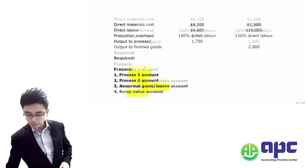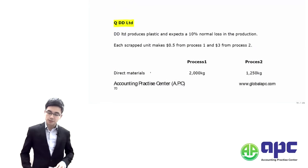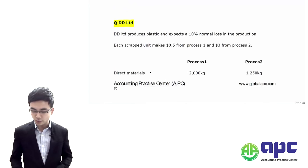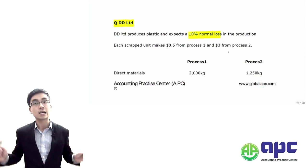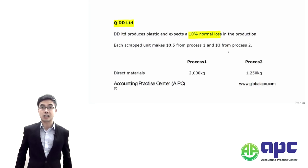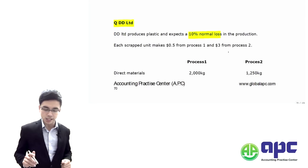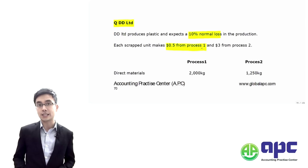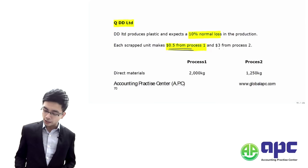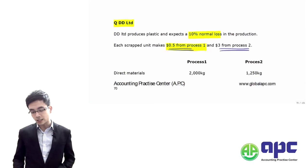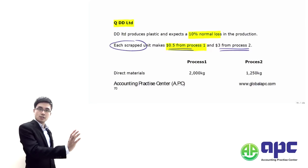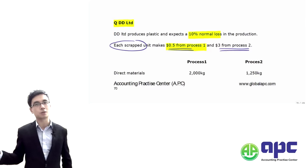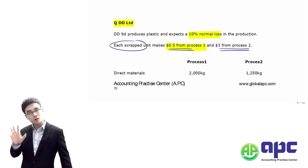DD Limited produces plastic and expects 10% normal losses in production. Each scrap unit makes $0.50 from process one and $3 from process two. Note that 'each scrap unit' refers not only to normal losses but also to abnormal losses that can be sold.